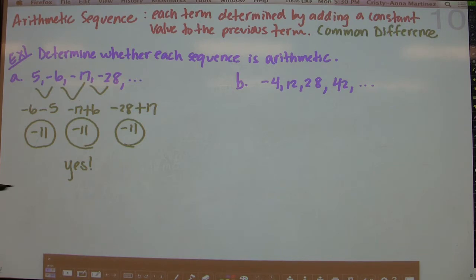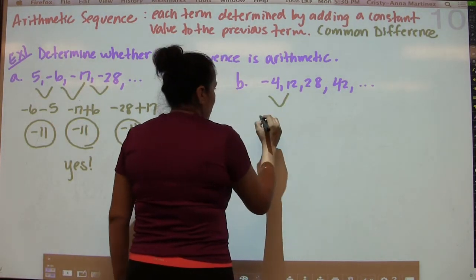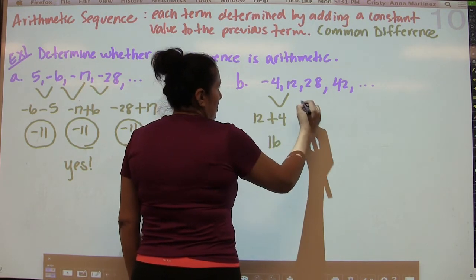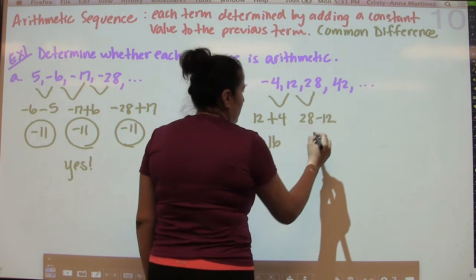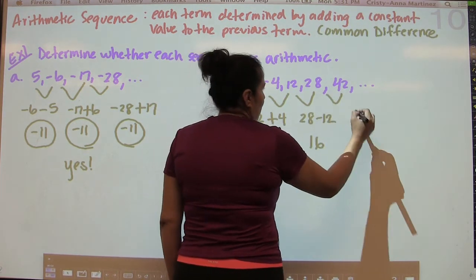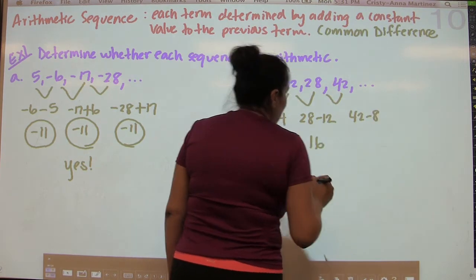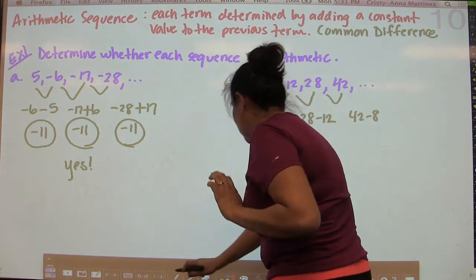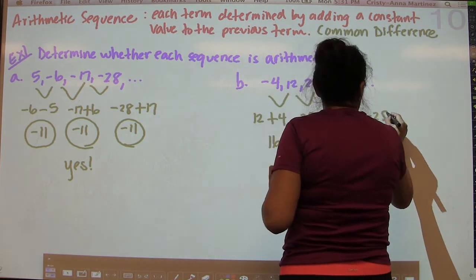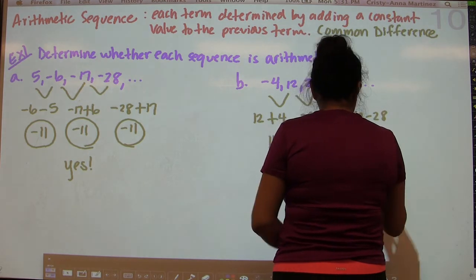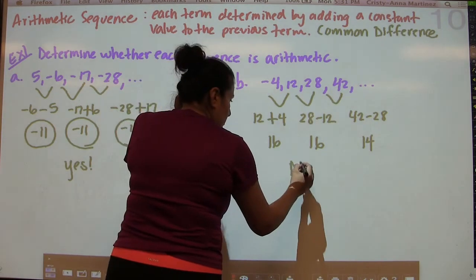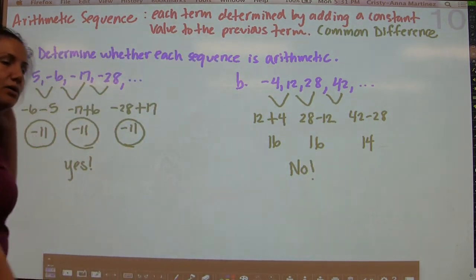Now we do the same thing in part B. We take 12 minus negative 4, which gives 16. Then 28 minus 12 also gives 16. But 42 minus 28 gives 14. Here you have a situation where you didn't always get the same common difference, so we say this is not an arithmetic sequence. And that's how simple that is.